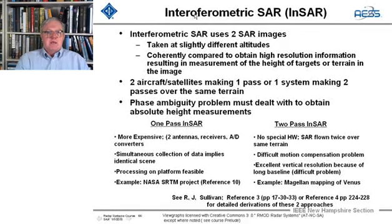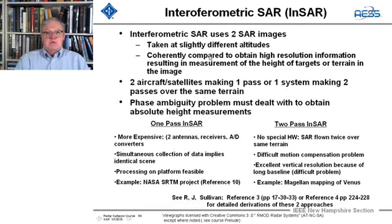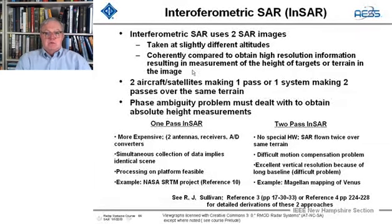The first we're going to look at is interferometric SAR — we call it INSAR. An interferometric synthetic aperture radar uses two synthetic aperture radar images taken at slightly different altitudes. You coherently compare these two images at different altitudes to get high-resolution information, resulting in the measurement of the height of the terrain. I'm going to show you a couple of different examples but focus on one.